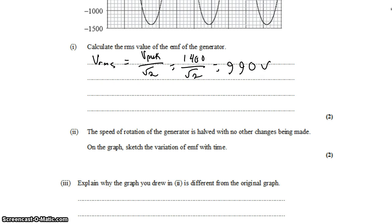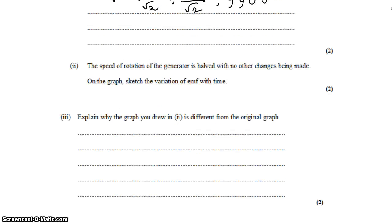The speed of rotation of the generator is now halved, with no other changes being made. We're going to, on the graph, sketch the resulting EMF. But before we do that, let me move on to part 3, because they're kind of related. It asks us to explain why we drew what we drew. So maybe let's reason out what we should draw first and then draw it.